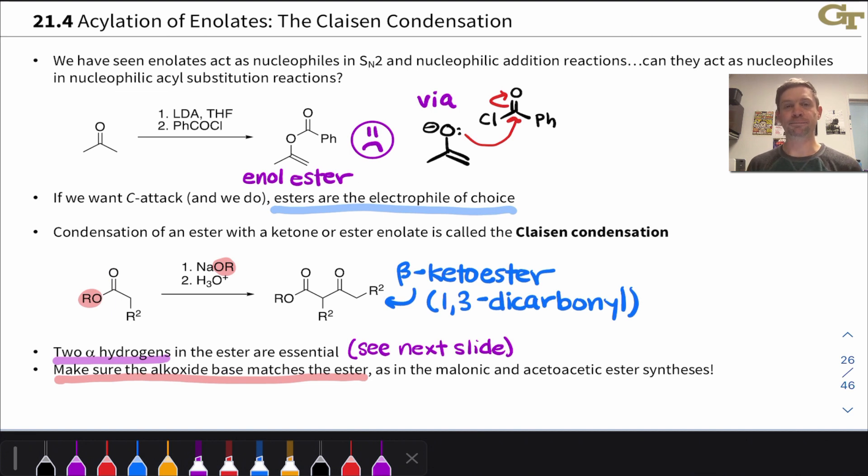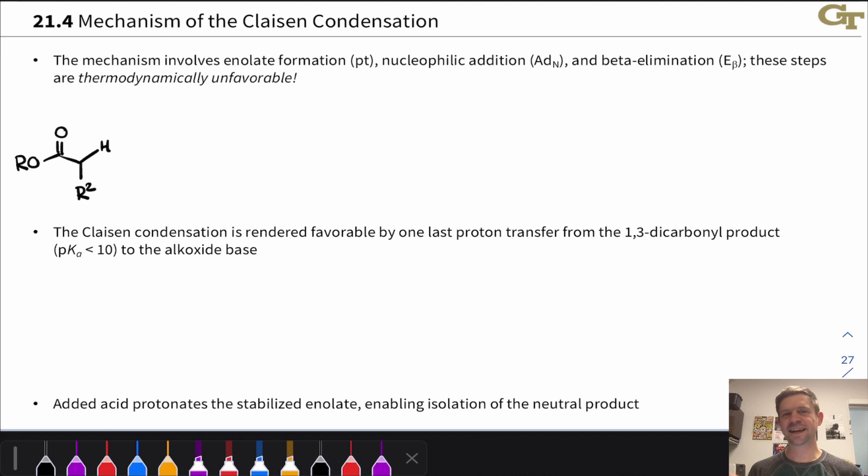Let's dig in now to the mechanism of the Claisen condensation and see why we need two alpha hydrogens in the reactant. This is a little bit unique, but it's absolutely essential, and after you've really understood the mechanism, it will become apparent why this is the case. The mechanism involves enolate formation and nucleophilic acyl substitution, but there's a quirk here as we'll see.